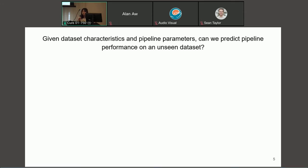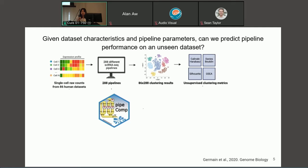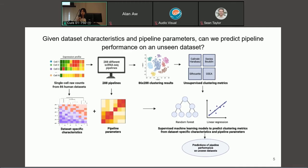So this led us to the question that we tried to answer, which was given dataset characteristics and pipeline parameters, can we predict pipeline performance on an unseen dataset? And to try and answer this question, we started off by collecting 86 single cell raw counts from human datasets from the EBI single cell atlas. And on these 86 datasets, we ran 288 different single cell RNA sequencing clustering pipelines using the pipecomp R package, which allows us to define different methods and parameters for each of the five steps we previously mentioned, and then run all combinations of them. Next, we computed some unsupervised clustering metrics on each of our 86 by 288 clustering results. And we also had some dataset-specific characteristics such as the number of cells and number of genes and pipeline parameters. And we used these dataset-specific characteristics and pipeline parameters as inputs to our supervised machine learning models, which we then used to try and predict the unsupervised clustering metrics so that we could eventually generate predictions of pipeline performance on unseen datasets.